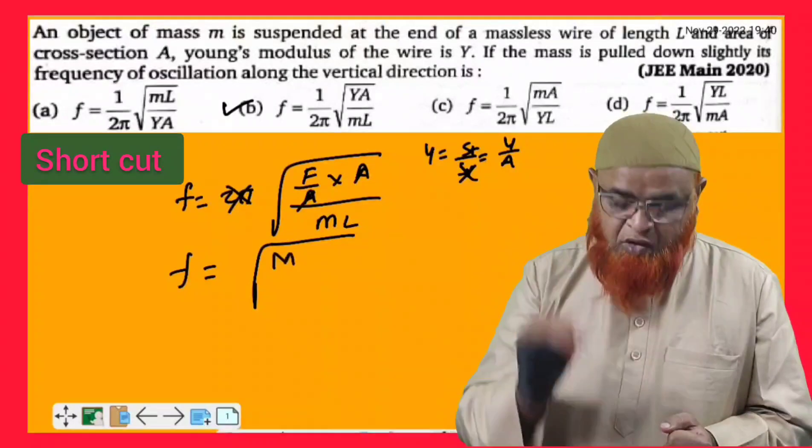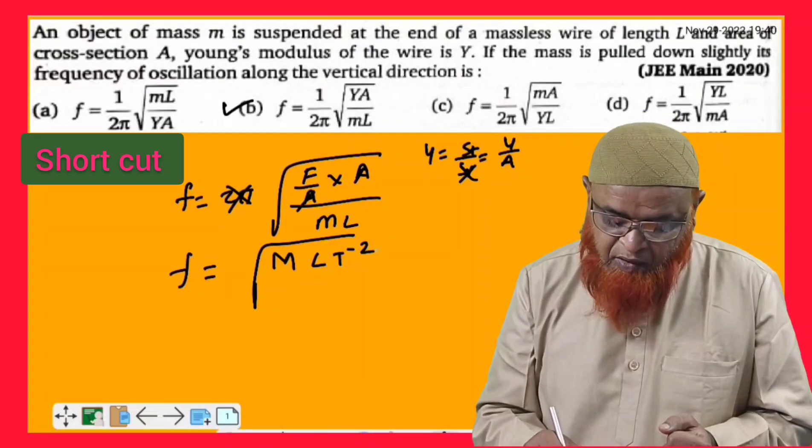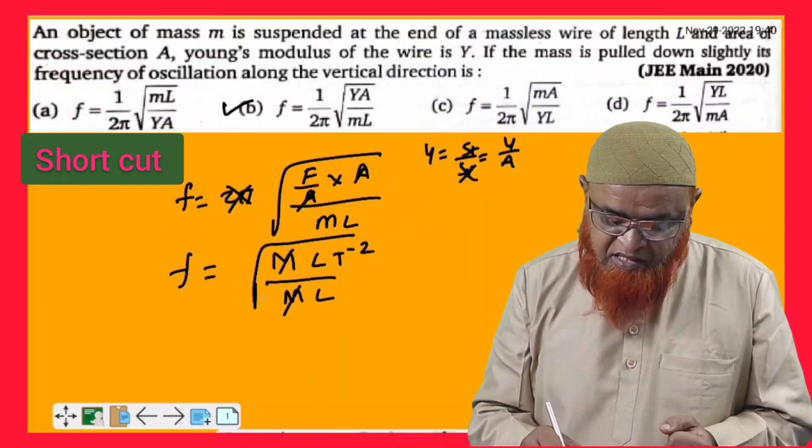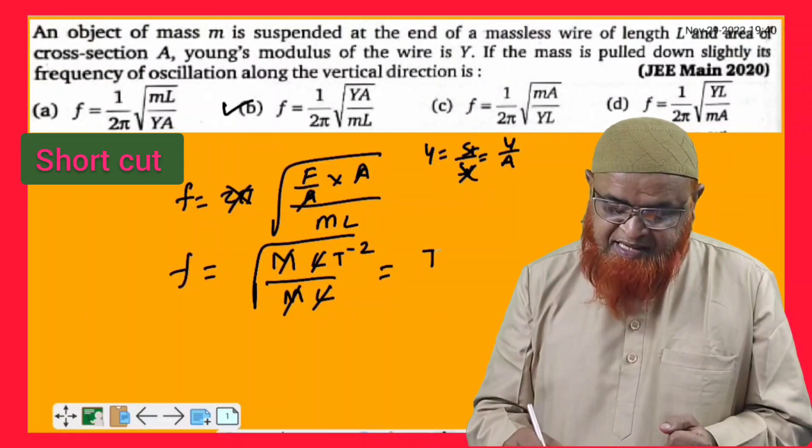Therefore, frequency is nothing but square root of force here. Force is nothing but mass into acceleration that is mLt^-2. And in the denominator it is m into l. So, m gets cancelled. L gets cancelled.